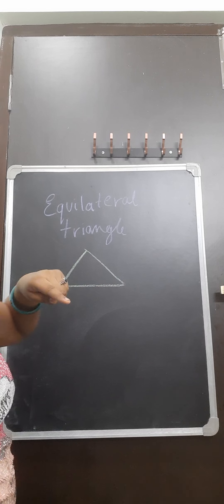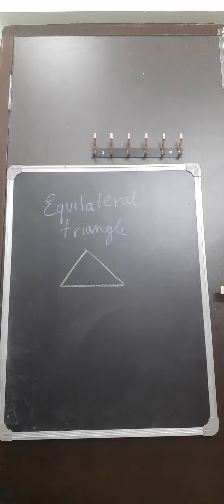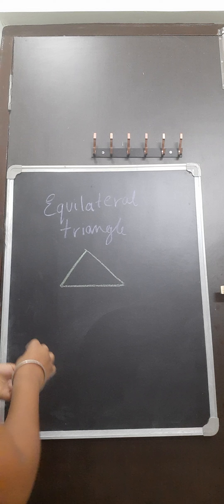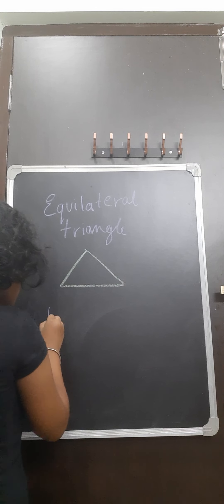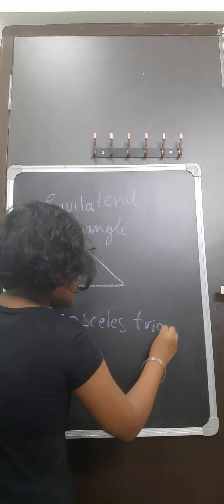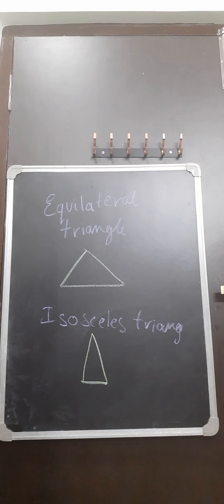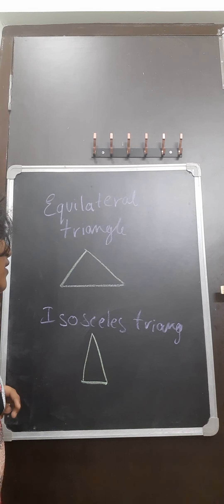First, Equilateral Triangle. So this triangle, all the sides of this triangle are equal in measure. As you have seen in the square video, all the four sides of the square are equal. And here all the three sides of the triangle are equal.